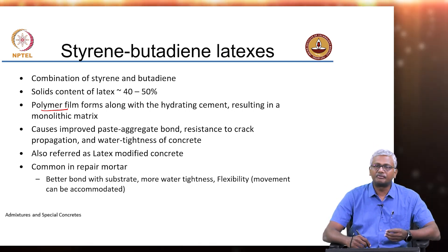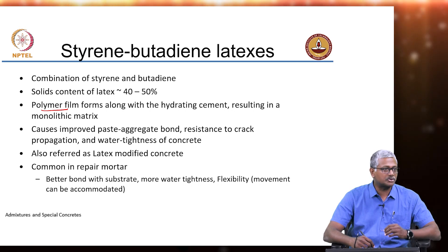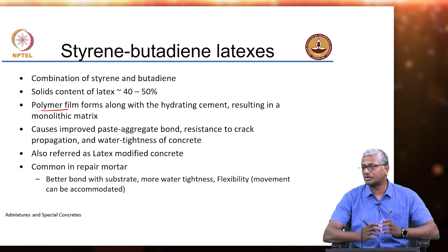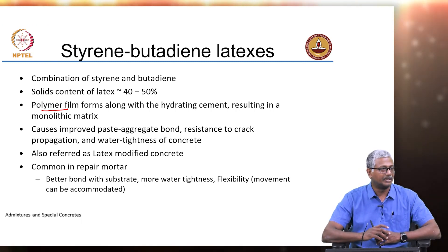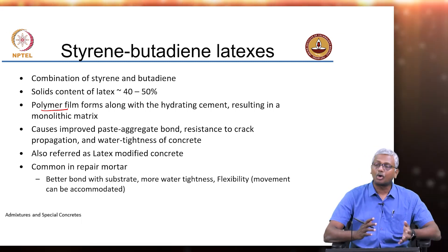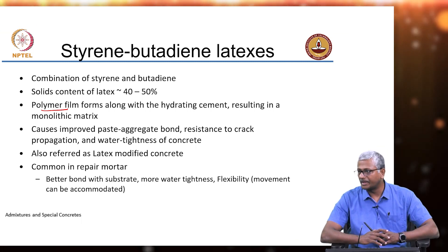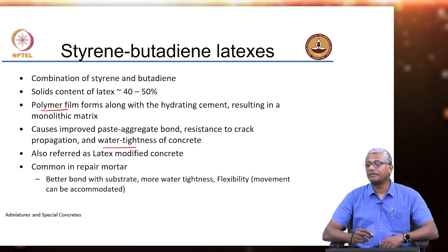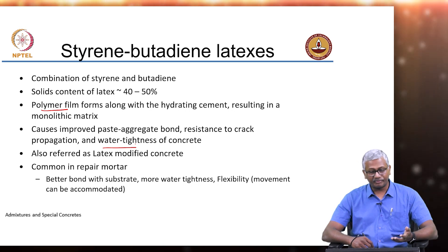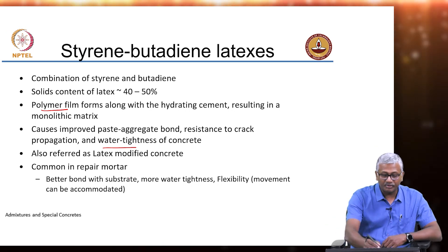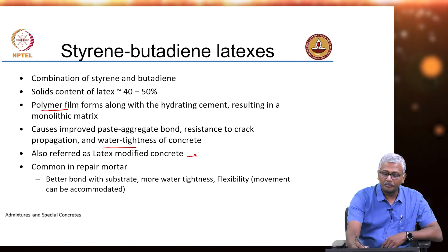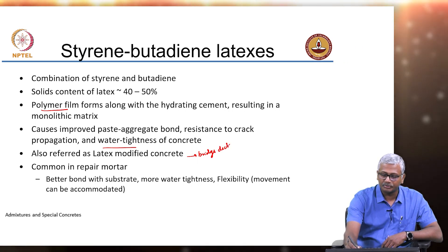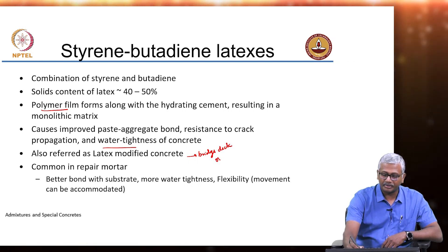The formation of this polymer film helps to actually improve the paste-aggregate bond. It improves resistance to crack propagation because it makes your system a lot more flexible and able to accommodate movements much better. Interestingly, it also improves the water tightness of concrete. For a long time, people were using polymer-modified or latex-modified concrete for bridge deck overlays — that was one of the common strategies for use of latex-modified concrete.